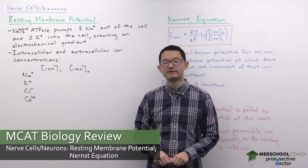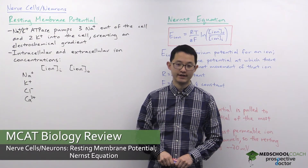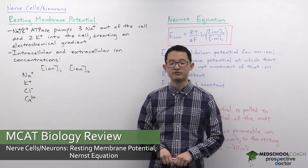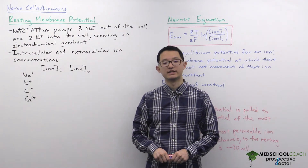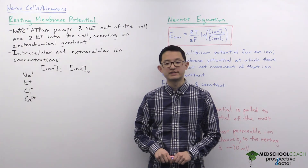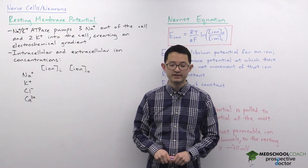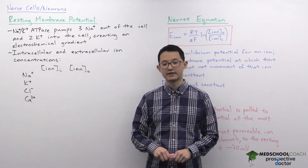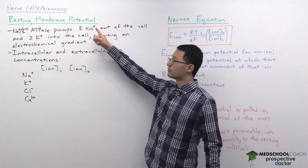In this video we're going to go over the resting membrane potential. The resting membrane potential is the membrane potential of a neuron at rest — when the neuron is not firing any action potentials and also when it's not receiving any kind of inputs from presynaptic neurons.